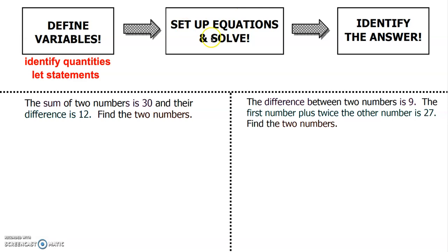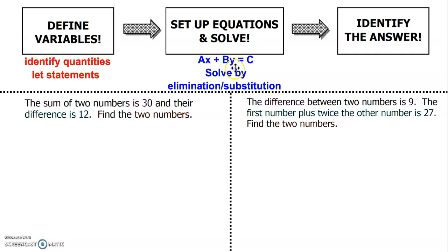Set up equations and solve. We're going to be using that standard form: AX plus BY equals C, and then solve by elimination or substitution. And then after that, identify your answer. It doesn't have to be (0,0) — it's just going to be in that point format.